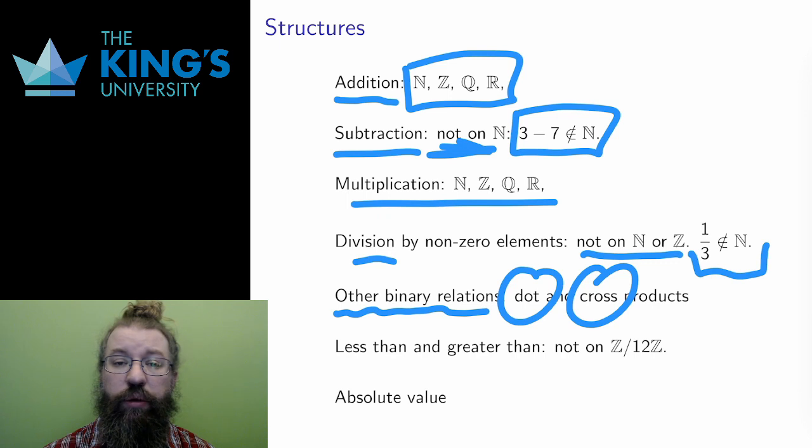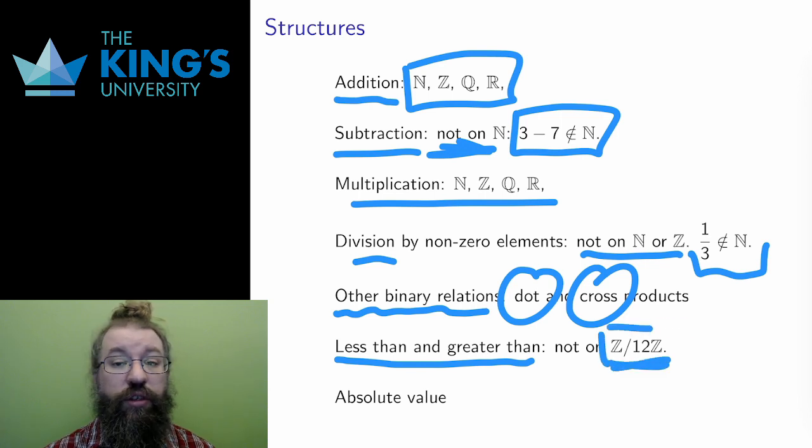Structures don't have to be just binary relations, though. Less than and greater than are structures on most of these sets. However, they are not a structure on modular arithmetic, because it goes around in a circle.